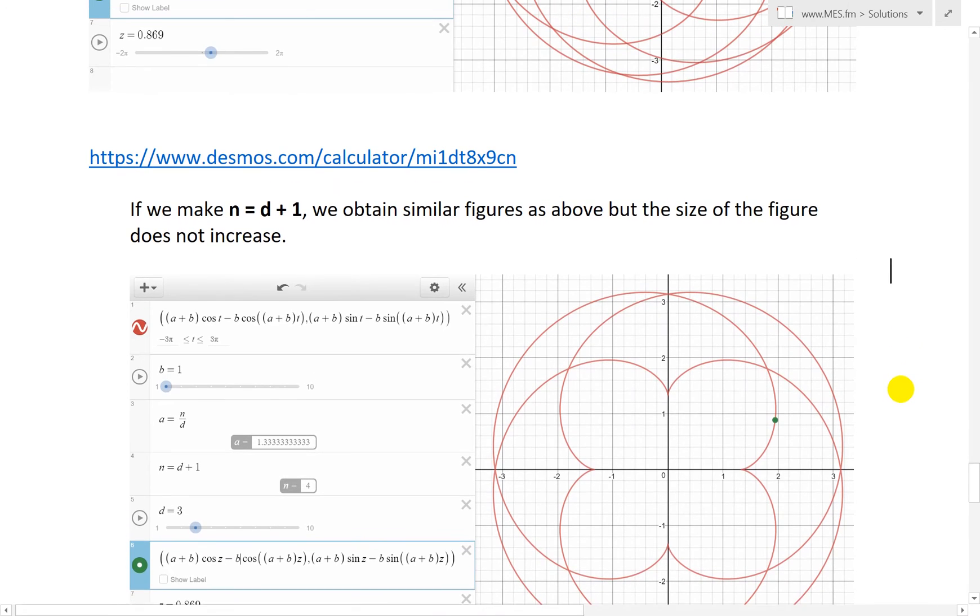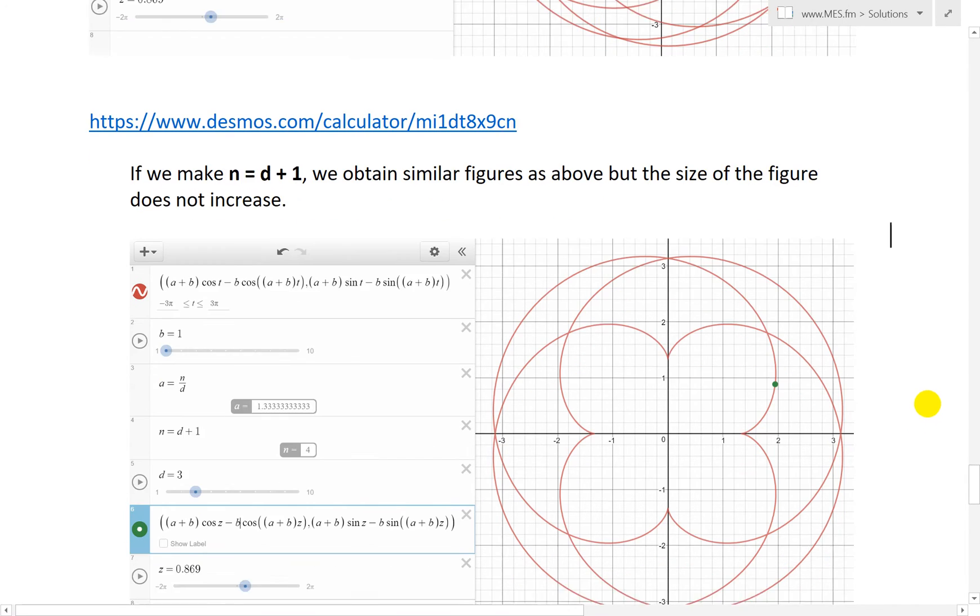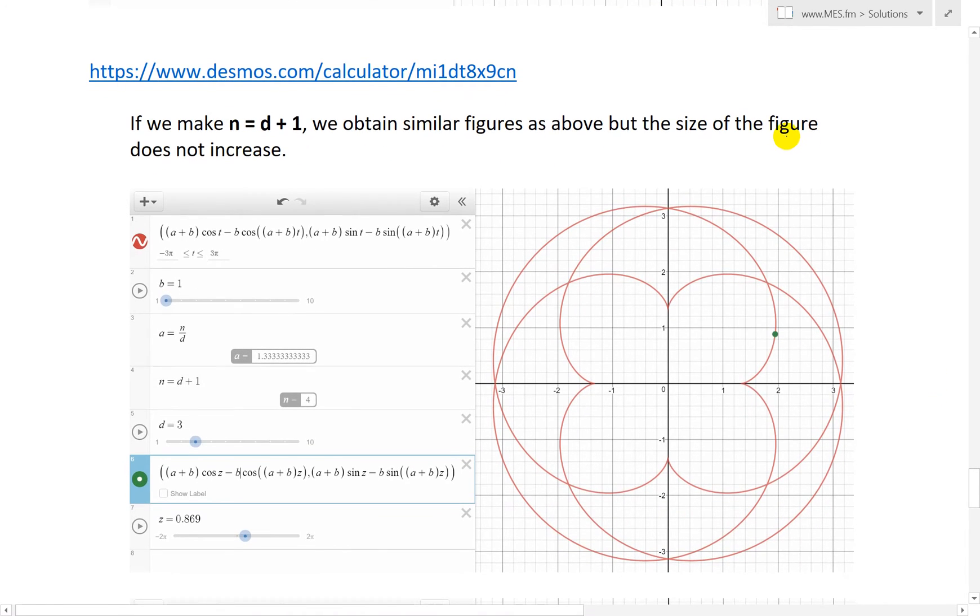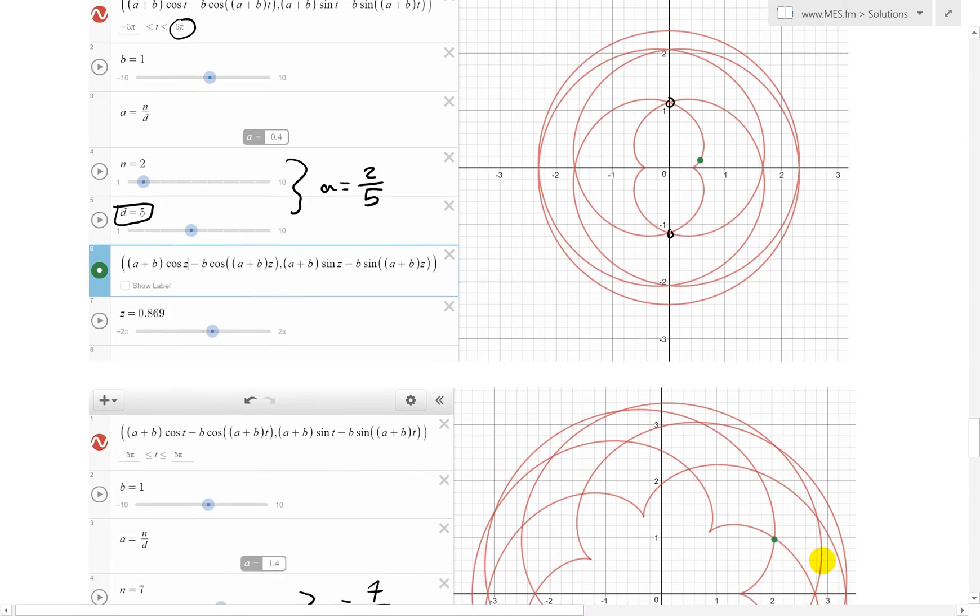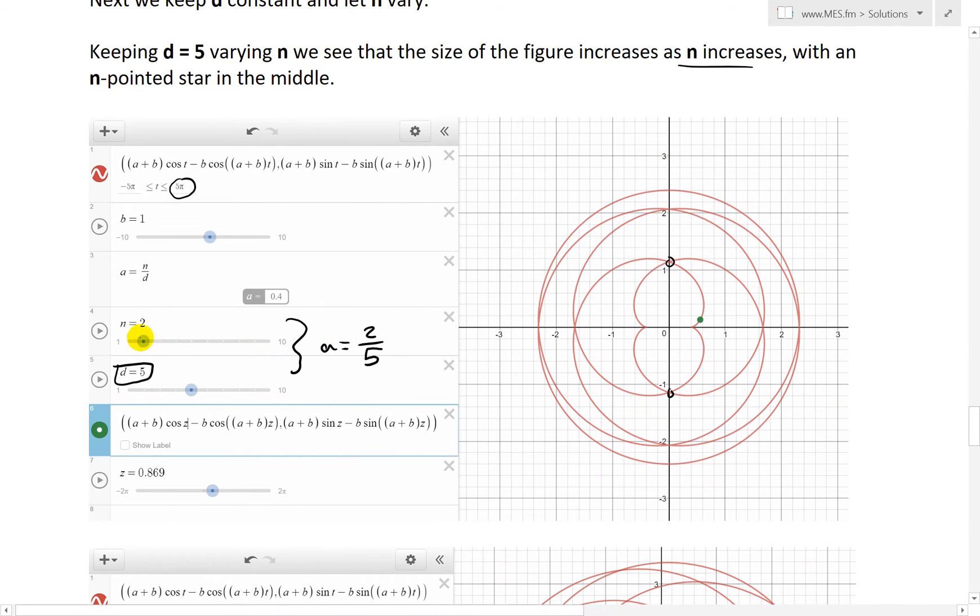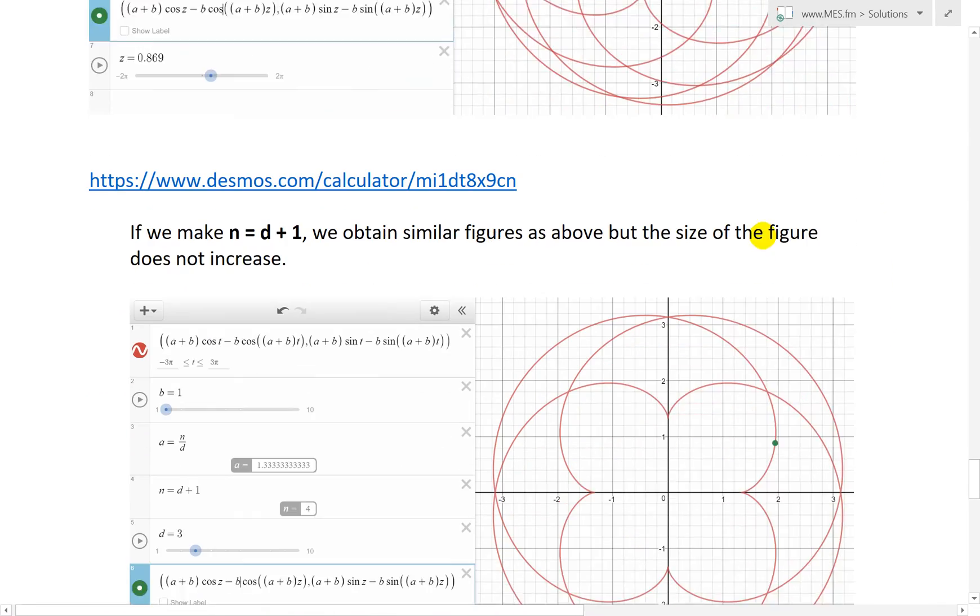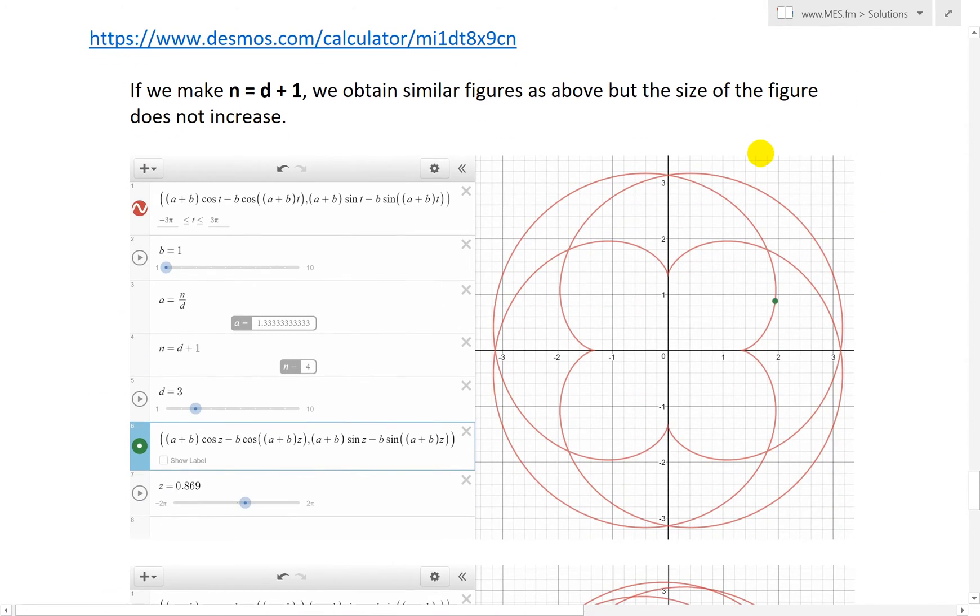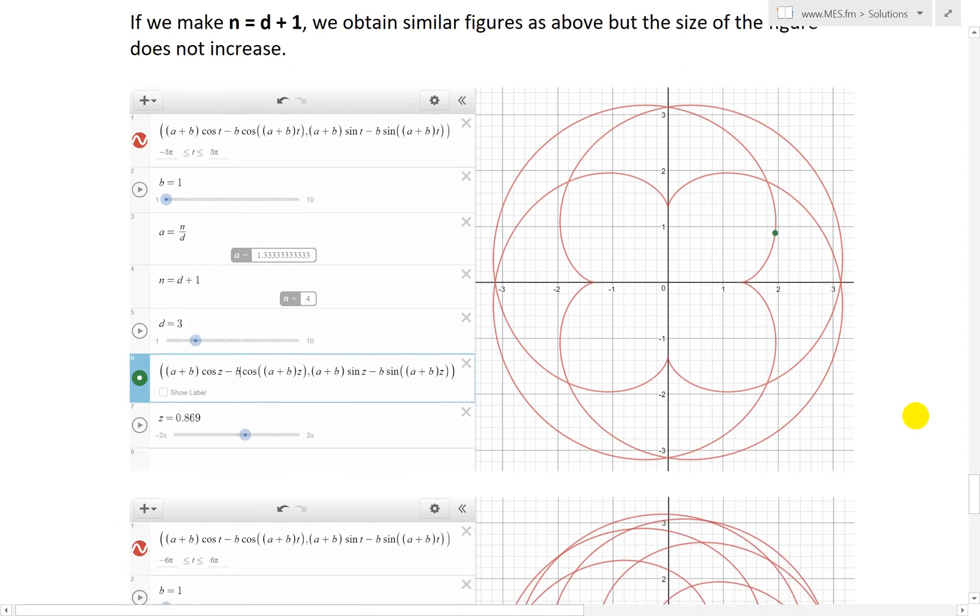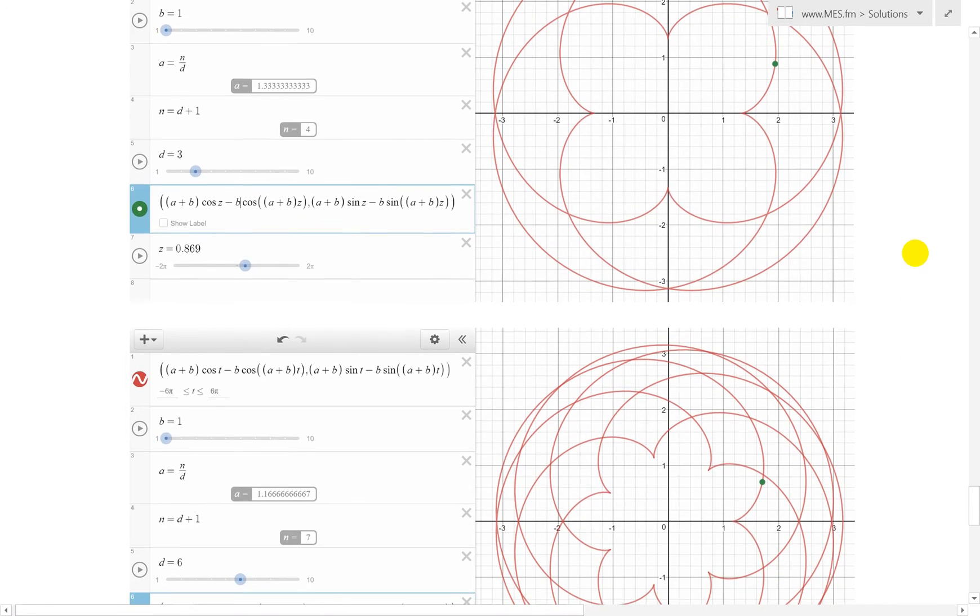And now the next thing I've done is if we make n equals to d plus 1, here's a calculator there, we obtain similar figures as above, but the size of the figure does not increase. So here, this one, if you have n is equal to, as you can see the size gets bigger and bigger like that, and you can also play around with it. But here's the exact same, very similar stuff, but now if you make it like this as an example, I think part 3 as well, from the hypocycloid, that's the kind of stuff I was doing.